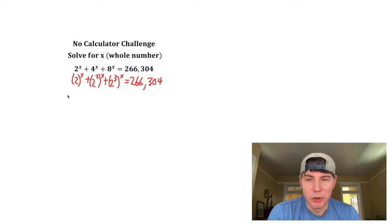So for the next step, these exponents can multiply. So this is going to become 2 to the x plus 2 to the 2x plus 2 to the 3x. And that's still equal to 266,304.